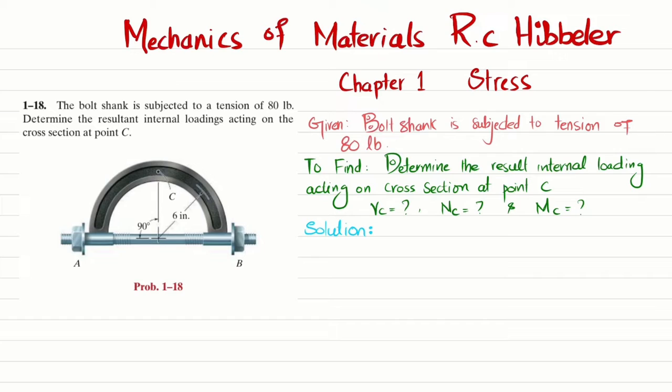The problem statement is: the bolt shank is subjected to a tension of 80 pounds. Determine the resultant internal loading acting on the cross section at point C. We need to find the internal loading at point C - the normal force, shear force Vc, and moments. These are all internal loadings.